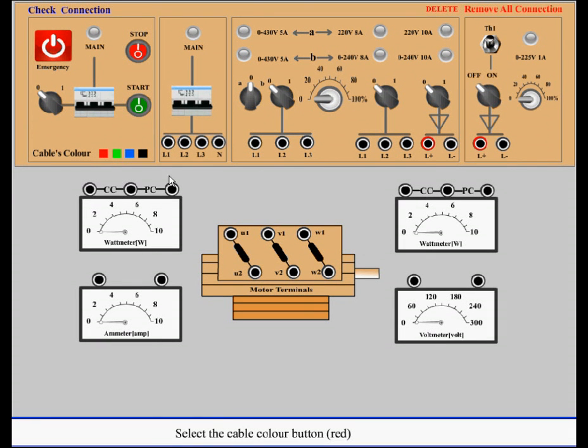Select the cable color button red. Connect L1 with CC of the wattmeter on the left side. Connect common point of wattmeter with U1.